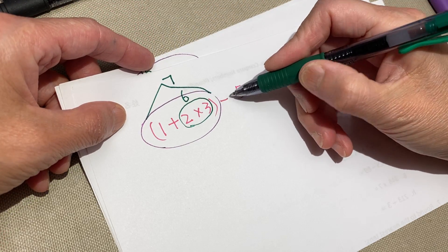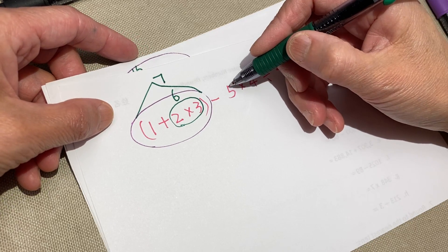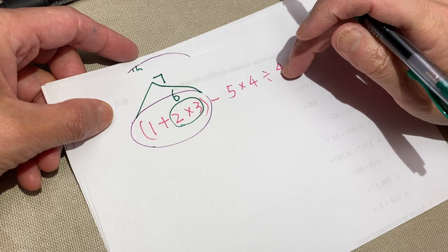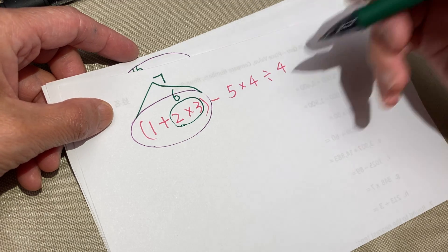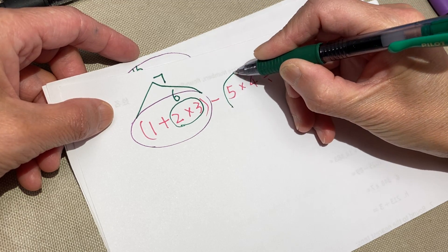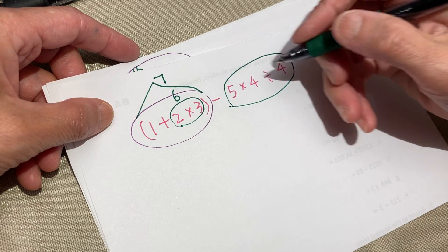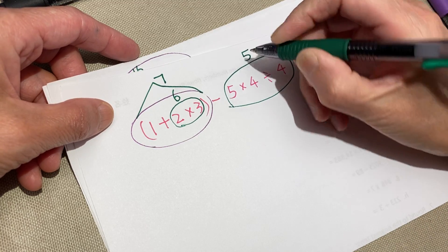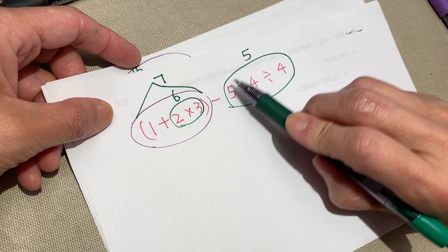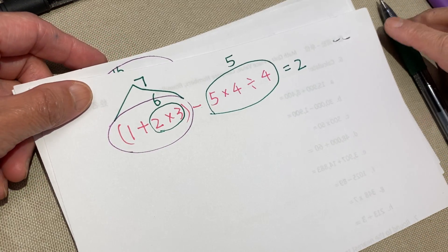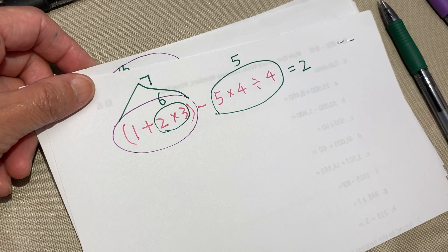Seven minus, and five times four divided by four. Four divided by four is already one. So minus four. Or you can think 20 divided by four is five. Okay, so seven minus five equal to two. Is that clear? Thank you very, very much.